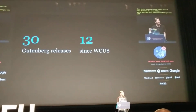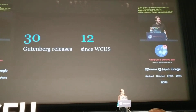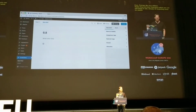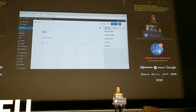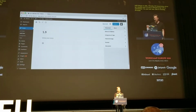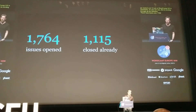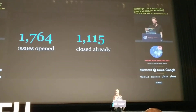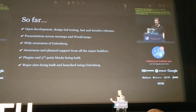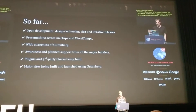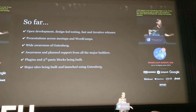There have been 30 Gutenberg releases since we started, and 12 just since WordCamp US in December. As you can see, this is running through all the different releases. There have been over 1,700 issues opened and 1,100 closed in the Gutenberg project thus far. From the development point of view, I'm very proud of it. We have open development, design-led testing, iterative releases, and presentations across pretty much every WordCamp now, including here. It's developed wide awareness.